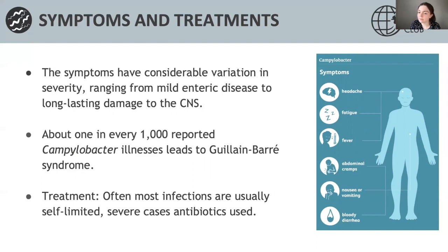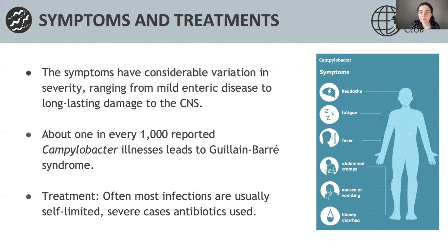In terms of more severe disease, about one in every 1000 reported Campylobacter illnesses go on to develop Guillain-Barré syndrome. This usually happens around two to three weeks after being infected. GBS happens when a person's immune system is triggered by an infection of Campylobacter. People with GBS can have muscle weakness and sometimes paralysis, which can last for weeks and often requires intensive medical care. It can also lead to other types of diseases such as arthritis and IBS.